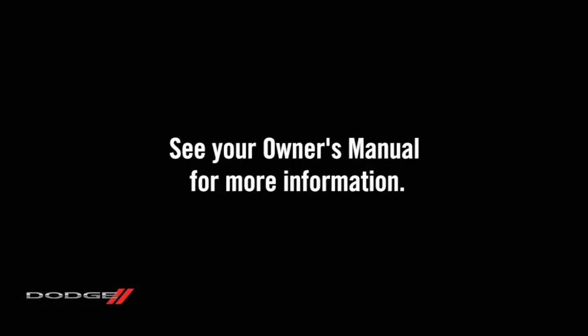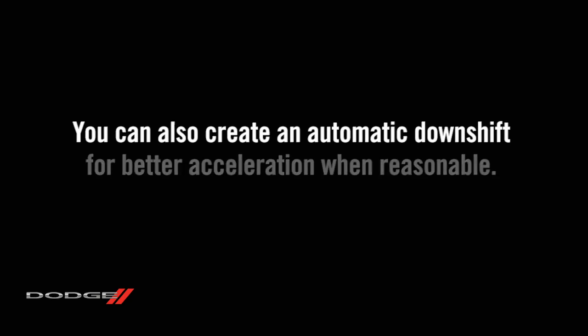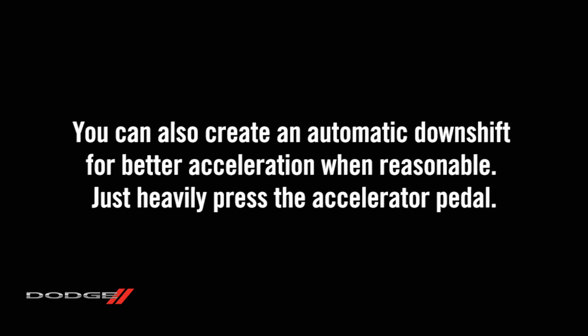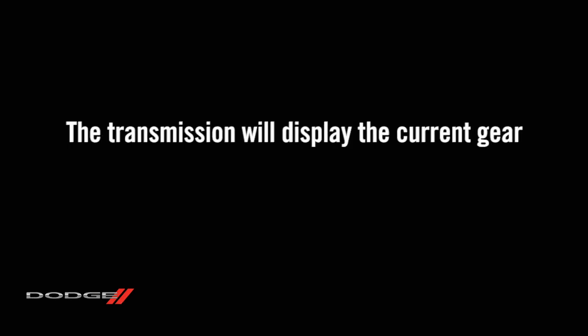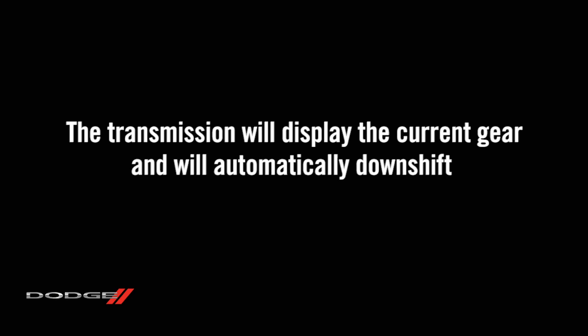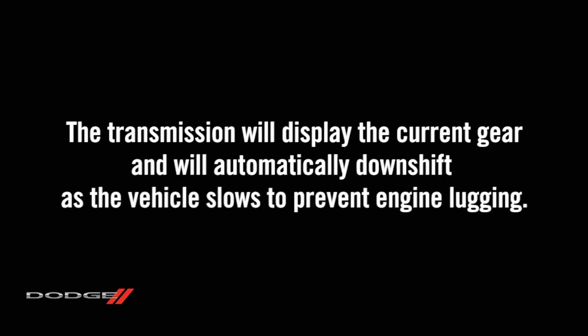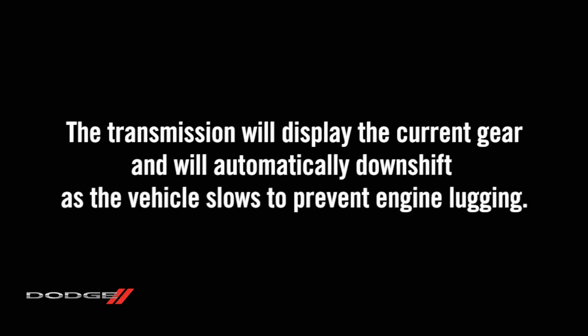the transmission will revert to normal operation after a period of time if the gear selector remains in drive. You can also create an automatic downshift for better acceleration when reasonable — just heavily press the accelerator pedal. The transmission will display the current gear and will automatically downshift as the vehicle slows to prevent engine lugging.